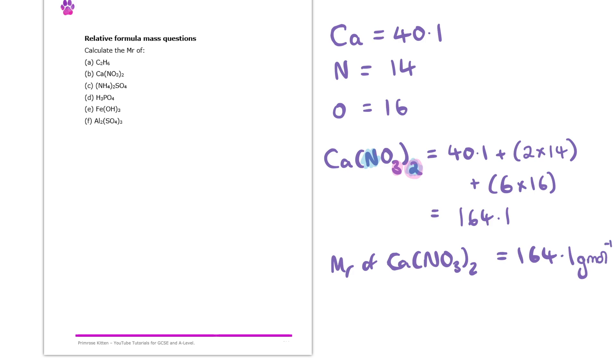Hopefully this is making a lot of sense. We just use the periodic table, look at the mass numbers, and then look at the formula and tally up how much of each atom we have.